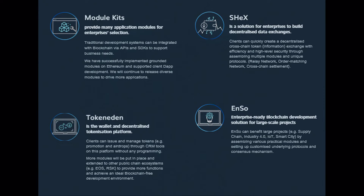Enso is an enterprise-ready blockchain development solution for large-scale projects. Enso will benefit large-scale use cases such as supply chain, Industry 4.0, IoT, and smart city, by collecting various smart modules and implementing customized underlying protocols and consensus mechanisms.